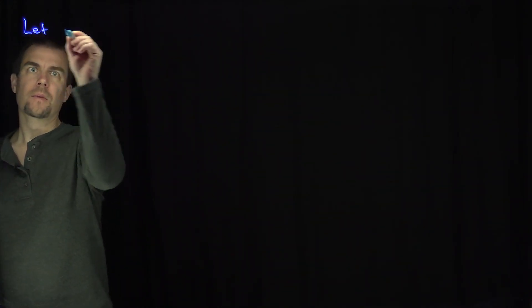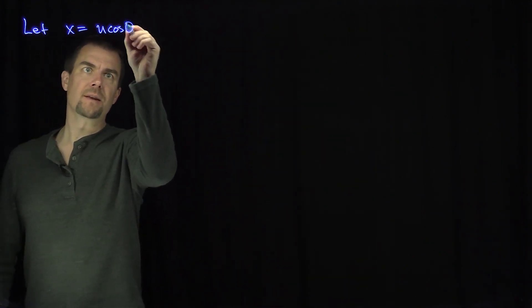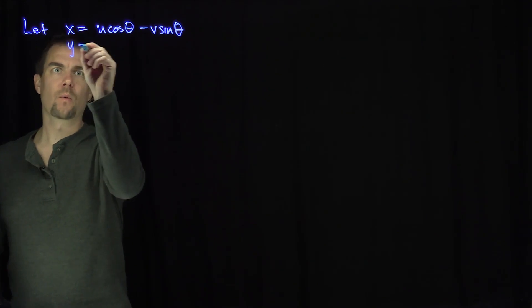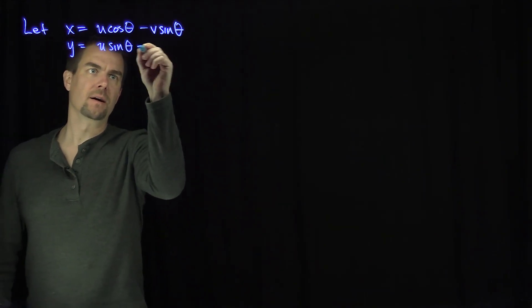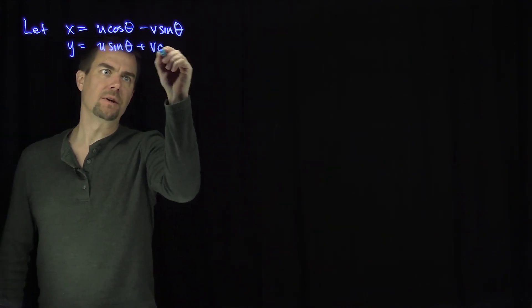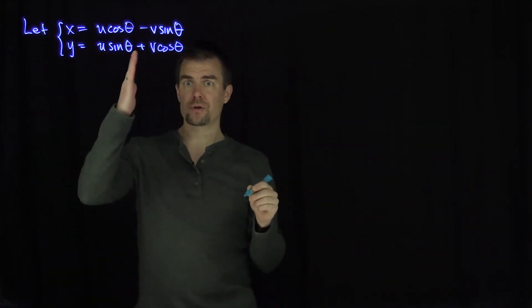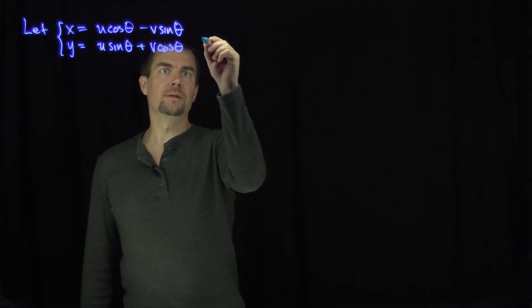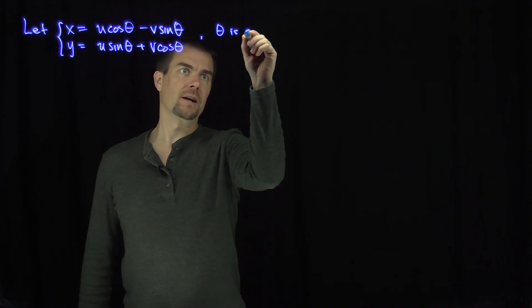Let x = u cosθ - v sinθ and let y = u sinθ + v cosθ. This transformation corresponds to a rotation of theta degrees anti-clockwise, where theta is a fixed constant.